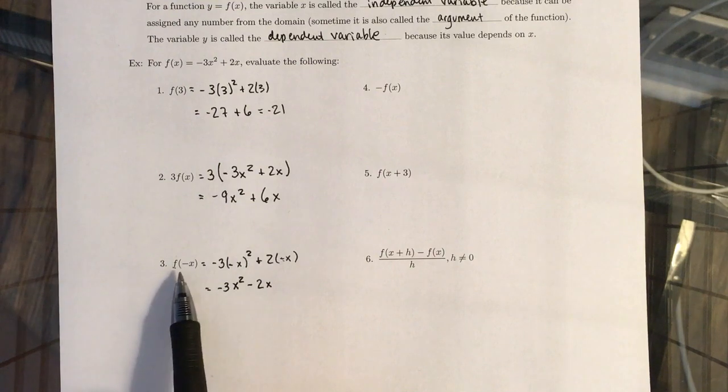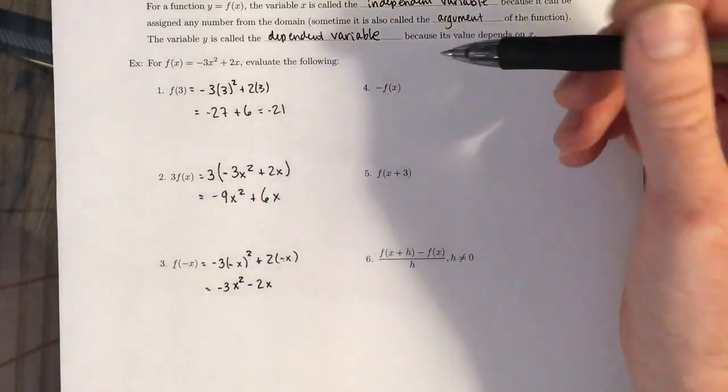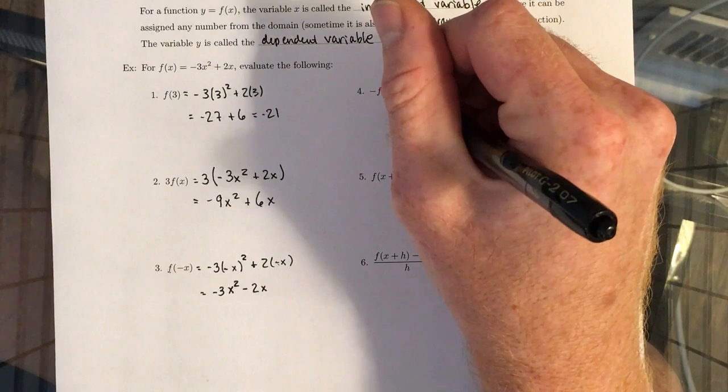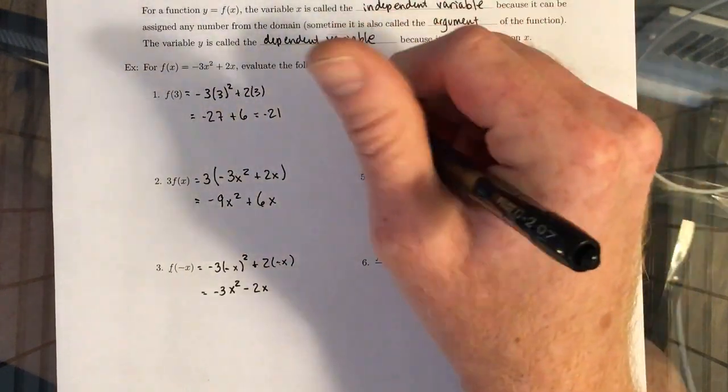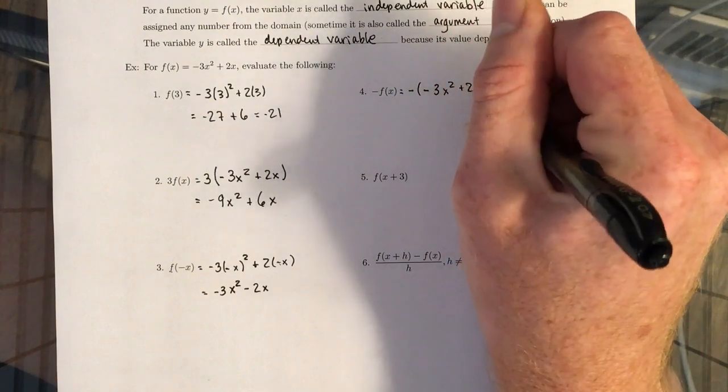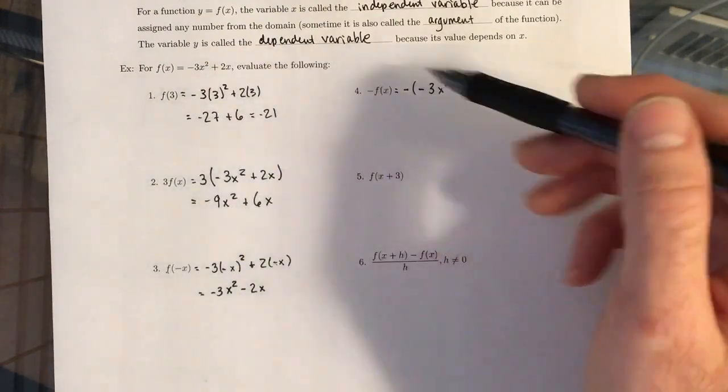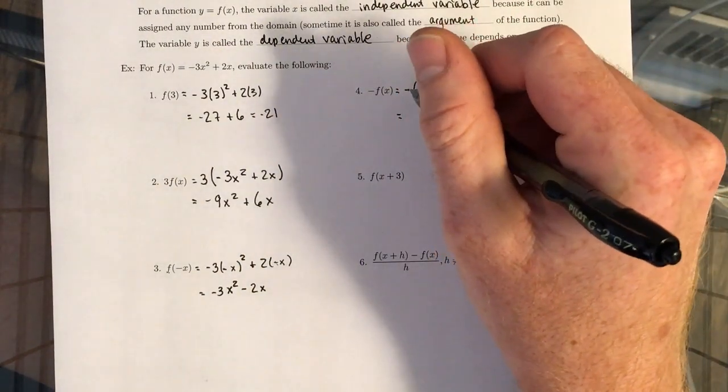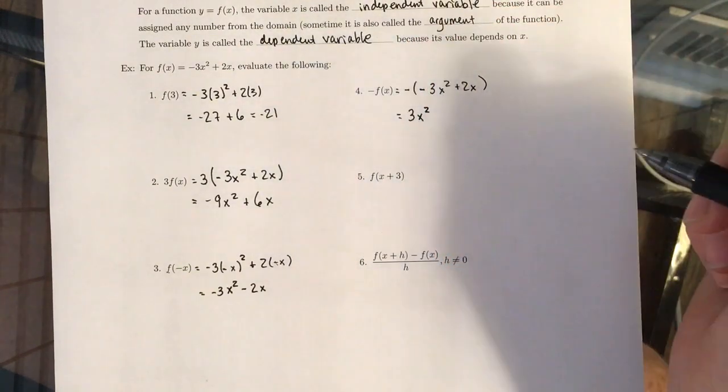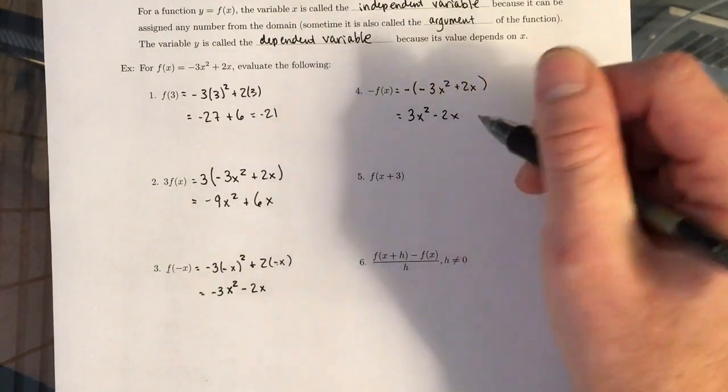So notice that this changed a lot of stuff in this equation. Over here, we're going to have a negative in front of the function. So we have negative, and then we replace F of X by how it's defined, negative 3X squared plus 2X. And just like we did in the second example, we distribute the negative. So negative 1 times negative 3X squared. Negatives cancel out, leaving us with 3X squared. And then we have negative 1 times 2X, which gives us negative 2X.